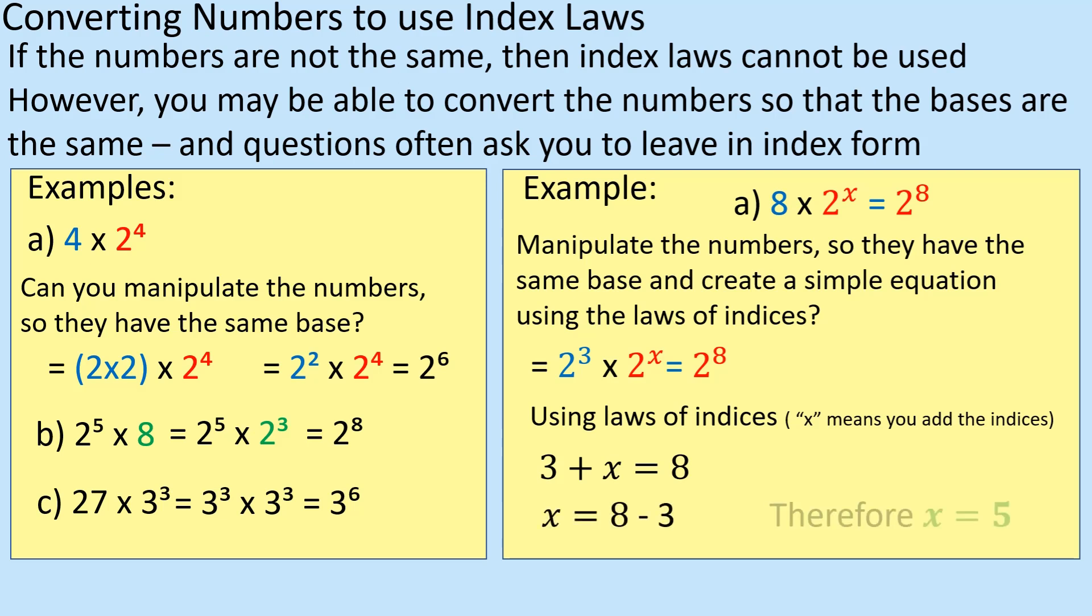So therefore x must be 5. Because what we're saying is these two added together must give you that. And I can check that if you want. 2 cubed times 2 to the 5 is 2 to the 8. So x is going to be 5.